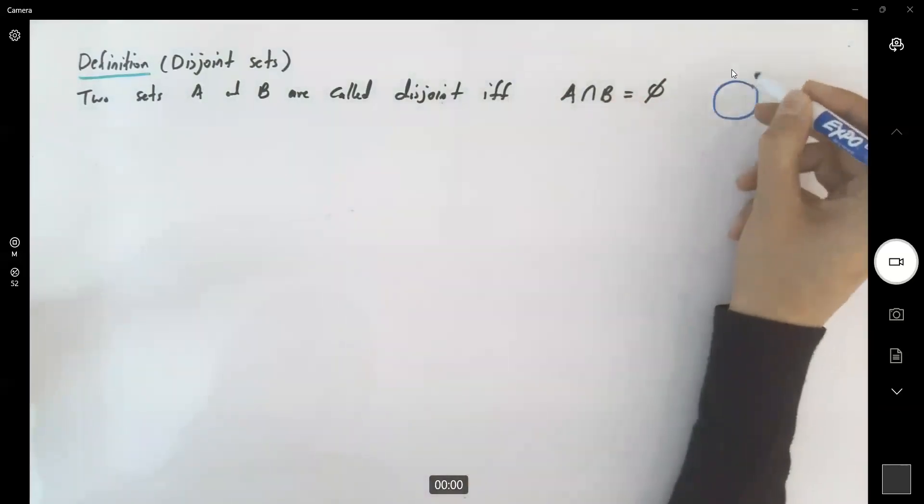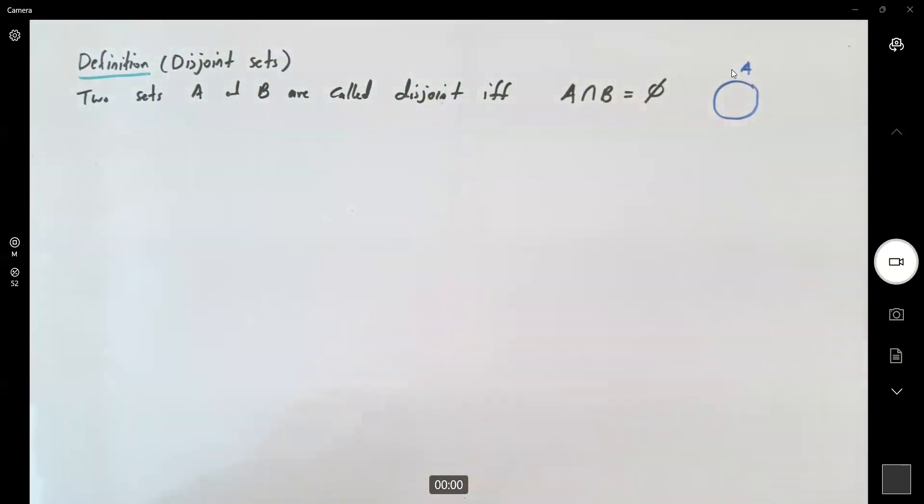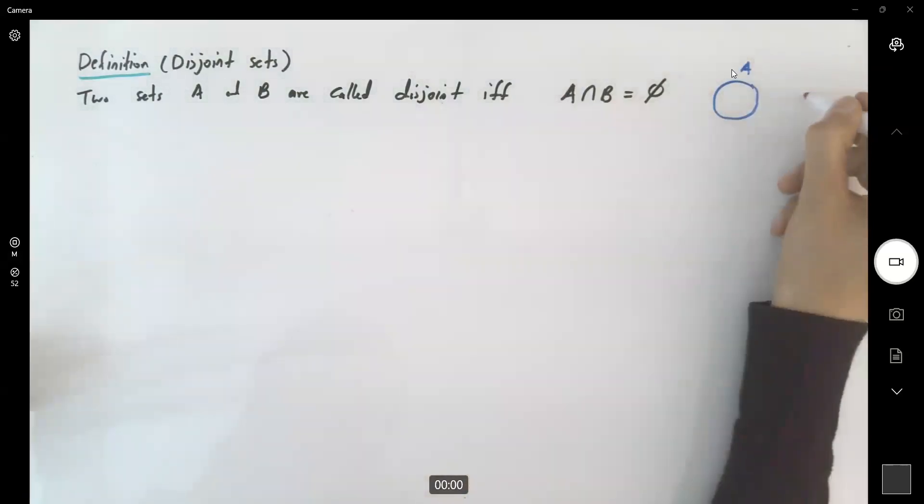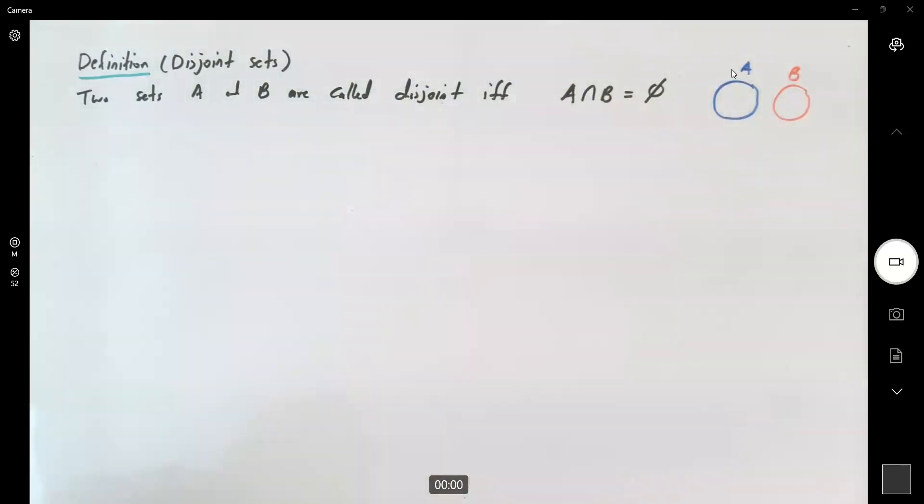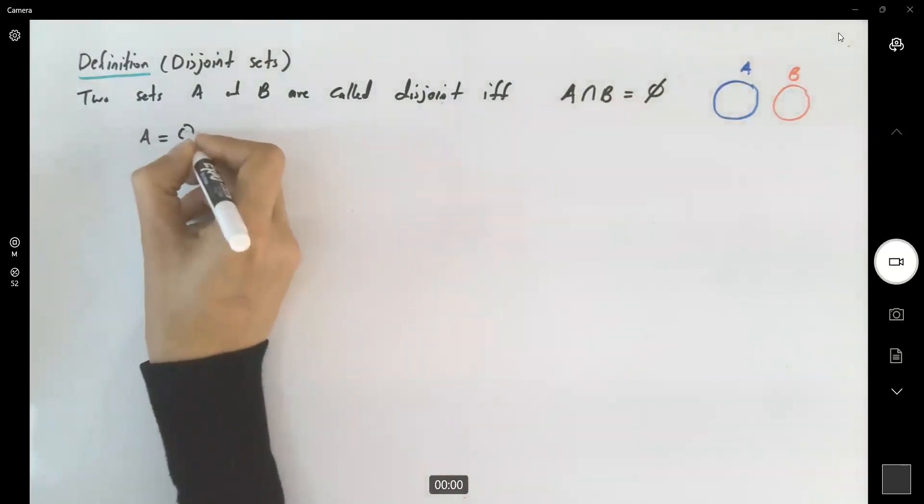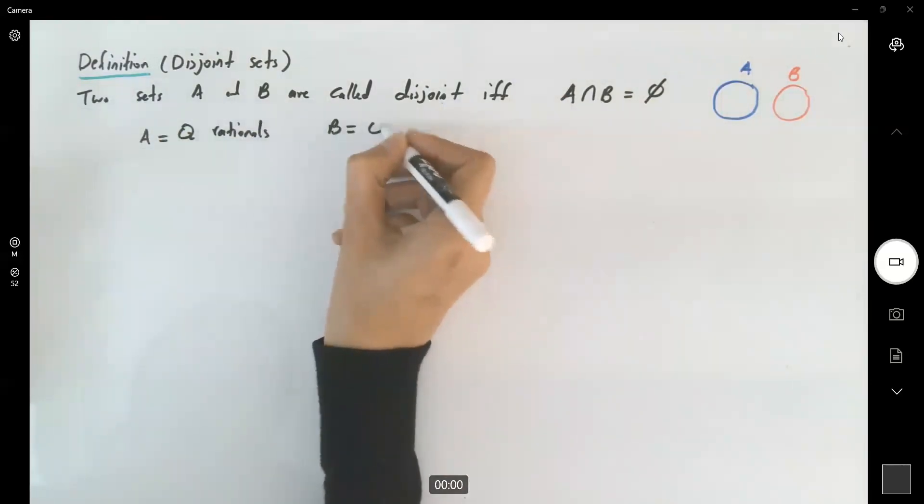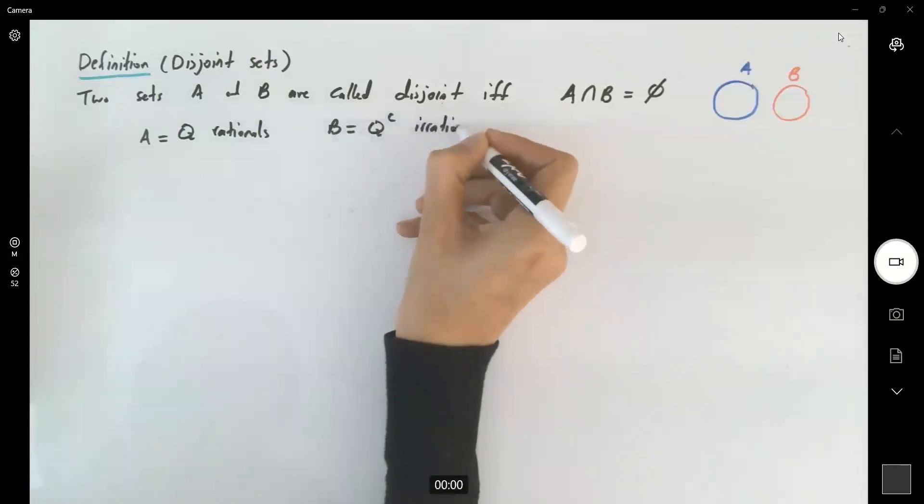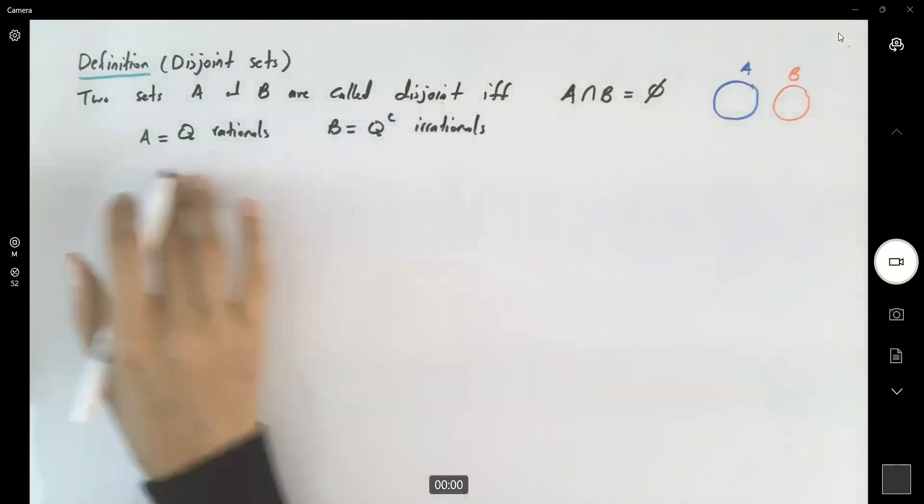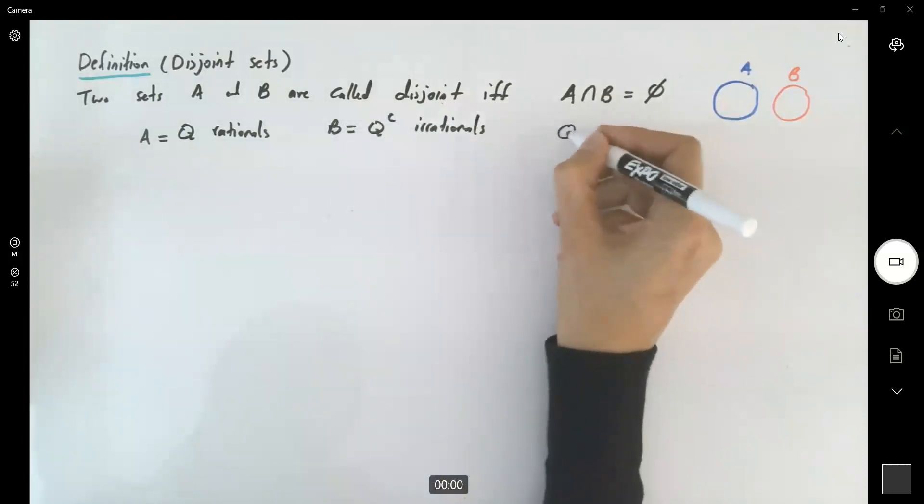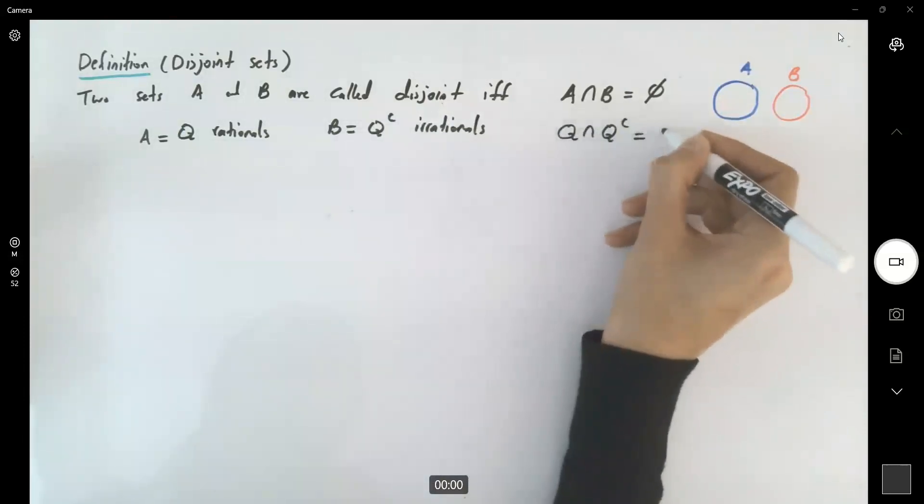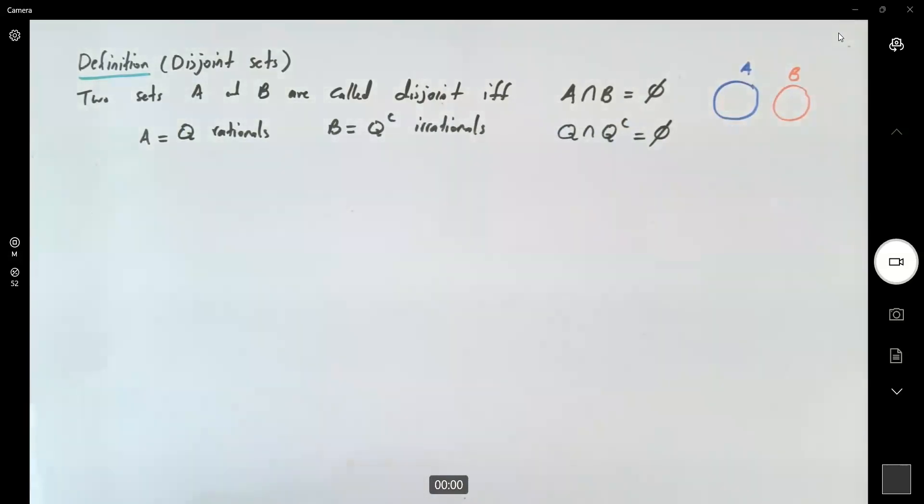So if you have set A and your set B, they have nothing in common. There are two different sets. For example, A can be Q rational and B is Q' irrational. These two sets are disjoint. There is nothing in common between these two sets. It's always empty.